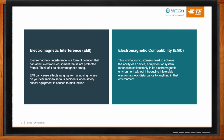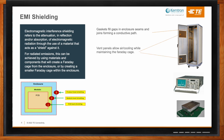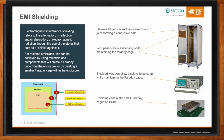Now Sam, here on Chalk Talk we've talked a lot about EMI in the past, but can you give us a refresher on what exactly EMI shielding is? EMI shielding refers to the attenuation in reflection or absorption of electromagnetic radiation through the use of a material that acts as a shield against it. For radiated emissions, this can be achieved by using materials and components that will create a Faraday cage around the electronics — at the enclosure level, within the unit at a module level, or at the PCB level. We're seeing a huge increase in the need for EMI shielding across a whole lot of different markets.